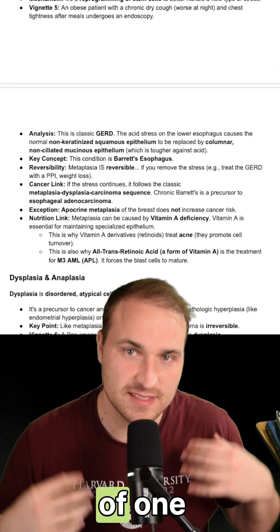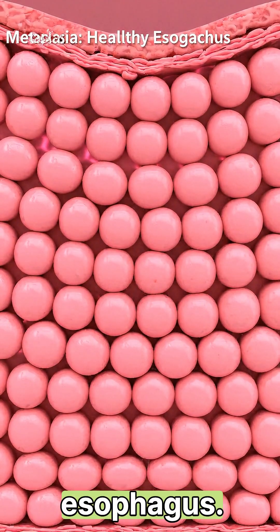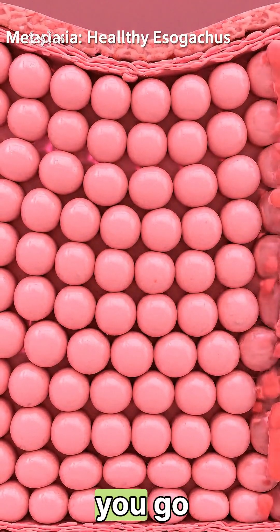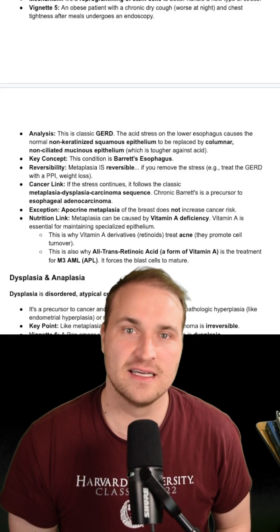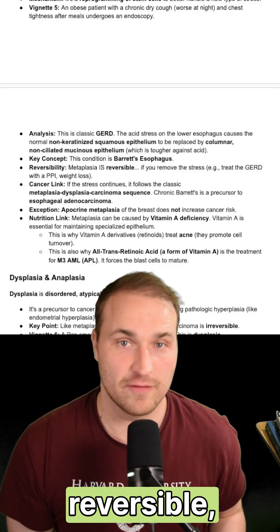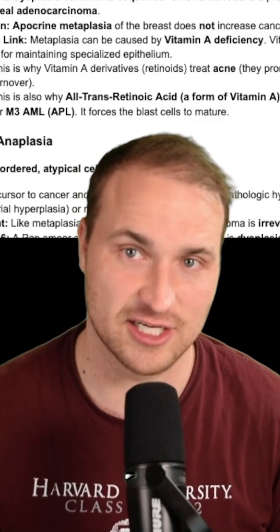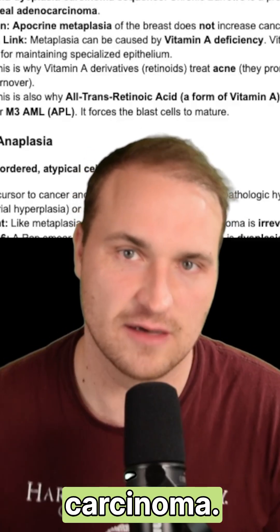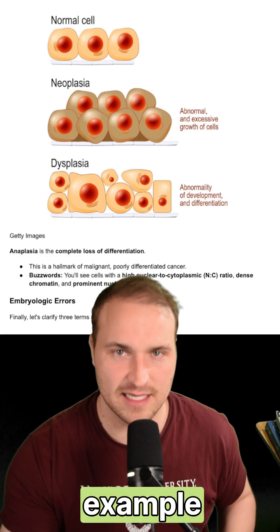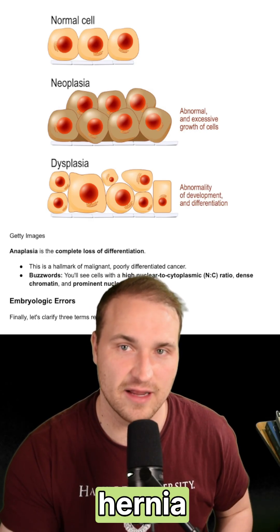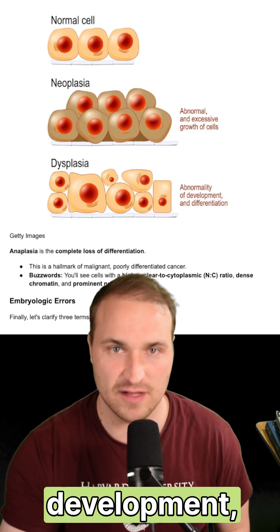Metaplasia is the replacement of one mature cell type to another. A classic example is Barrett's esophagus — that's where you go from squamous to columnar due to chronic GERD. This is reversible, but chronic stress can progress to dysplasia, and dysplasia progresses to carcinoma. Hypoplasia refers to incomplete development; an example would be pulmonary hypoplasia in congenital diaphragmatic hernia.